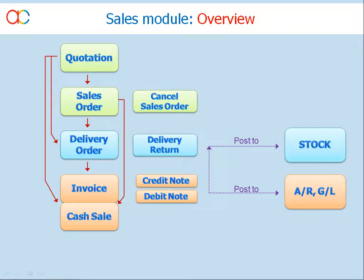The Sales module is mainly used to generate sales documents such as quotation, sales order, delivery order, invoice, cash sales, debit note, and credit note. In AutoCount, the Sales module is fully integrated with stock, AR, and GL modules, which means whenever relevant, transactions in the Sales module will automatically update the entries or reports in the stock, AR, and GL modules.